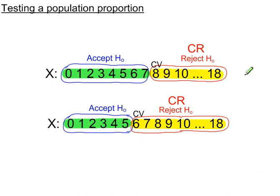This is how modifying the significance level has an impact on the probability of type 1 and type 2 errors. So type 1 and type 2 errors are linked.